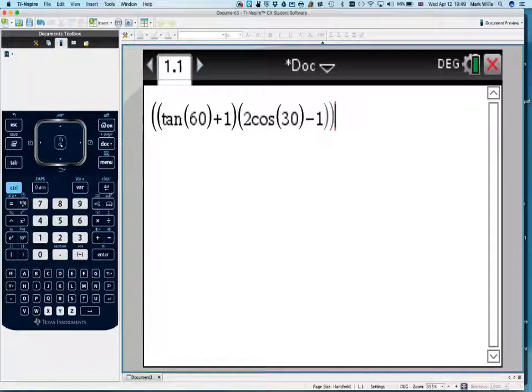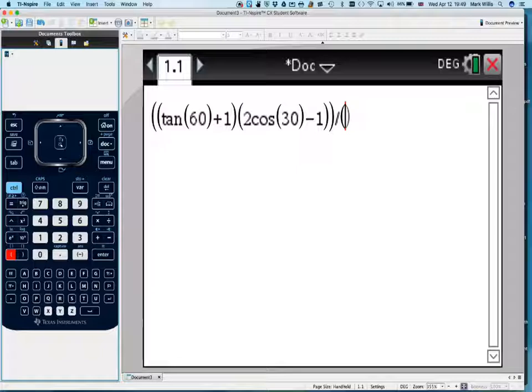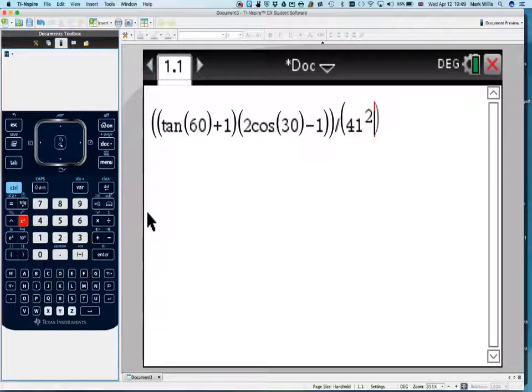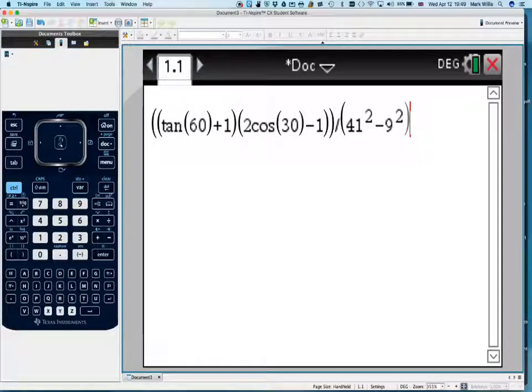And then we need another set of brackets. So we need a bracket there and a bracket there, and then we need to respond it all divided by another set of brackets of 41 squared. And you should have your calculator out while you're doing this and try to do it for yourselves. Squared, and then put that there. Okay, pause the video here and just check that you've got that in correctly.